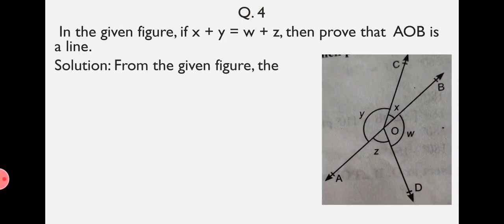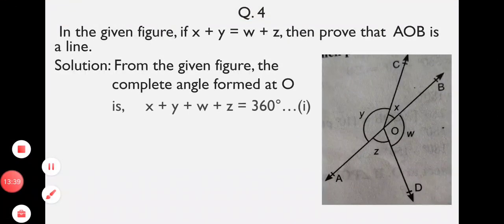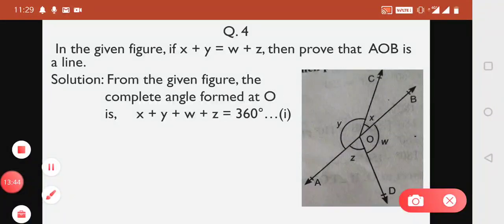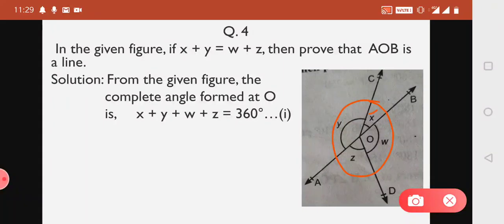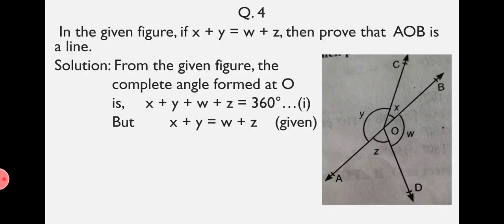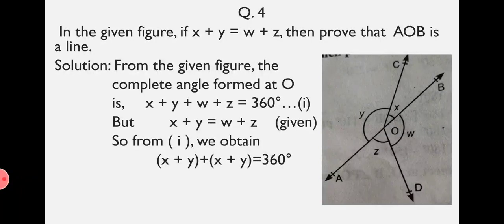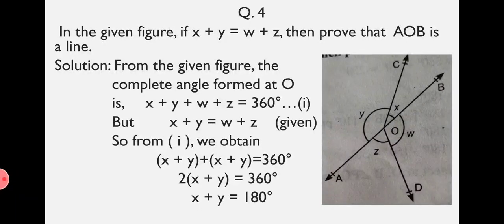For the solution, from the given figure, the complete angle formed at O is X plus Y plus W plus Z equals 360 degrees, since a complete angle is always 360 degrees. Now it is given in the question that X plus Y equals W plus Z. Using this, from equation 1 we substitute W plus Z with X plus Y, giving X plus Y plus X plus Y equals 360, that is 2 times (X plus Y) equals 360. Therefore, X plus Y equals 180 degrees.